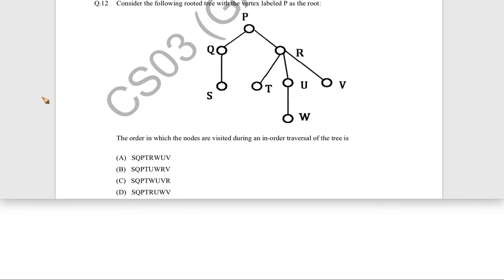Now, let us see this question. This question came in GATE 2014 for one mark. The question is: consider the following rooted tree with vertex labeled P. So this is the vertex which is root.